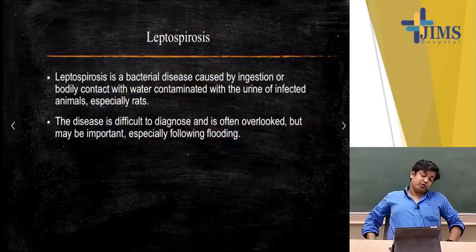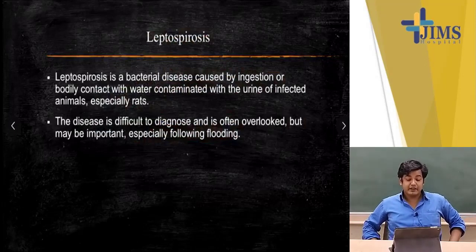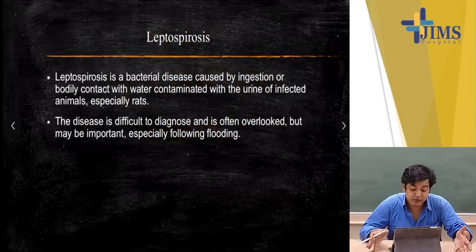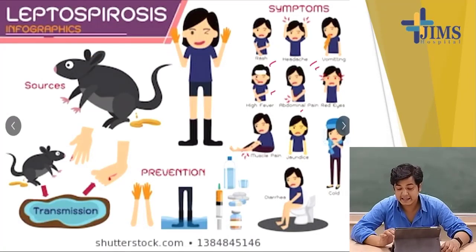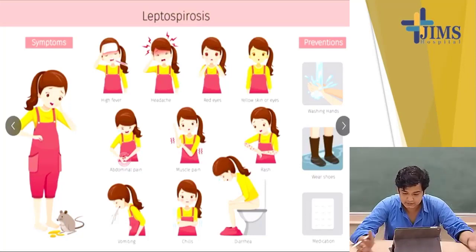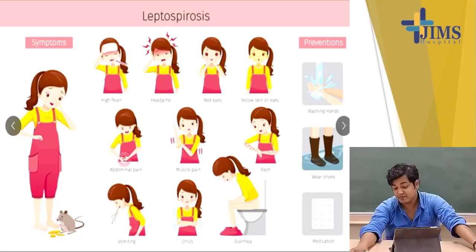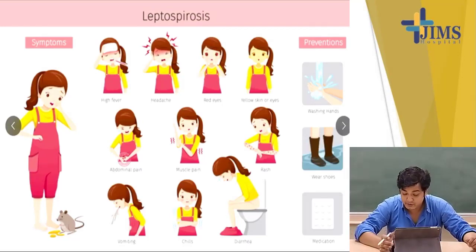Leptospirosis is a bacterial disease caused by ingestion or bodily contact with water contaminated with urine of infected animals, especially rats. It may be difficult to diagnose and is often overlooked because it typically occurs after flooding. Symptoms include rashes, headache, vomiting, fever, abdominal pain, red eyes, muscle pain, jaundice, diarrhea and cold. Prevention: wash your hands, maintain personal hygiene, wear shoes or socks when going outside after flooding, and take medication promptly if you develop fever or any symptoms of leptospirosis.